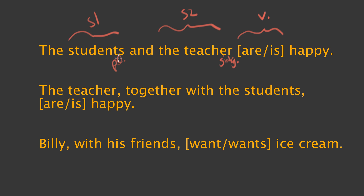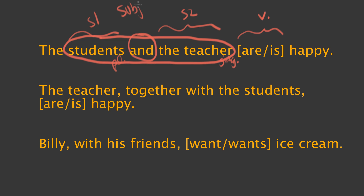Which one of them controls the verb? The way you figure this out is you look at the word that joins them. In this particular case, the word that joins them is 'and.' We're really fortunate here that 'and' is the only word that creates a compound subject. So 'students and teacher' is actually a compound subject — this whole thing is your one true subject. There is no subject 1 and subject 2.